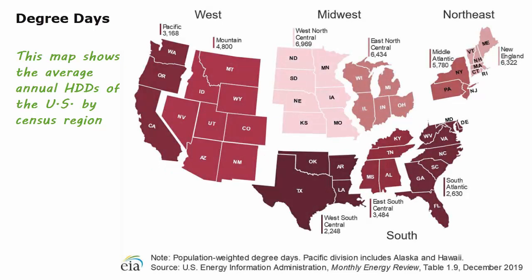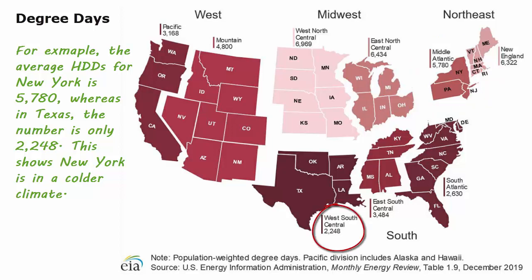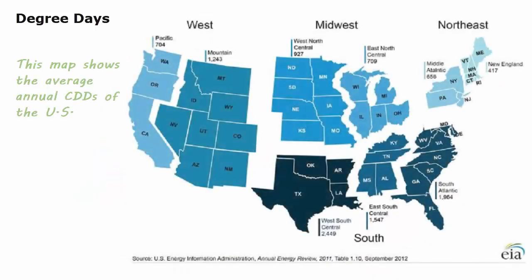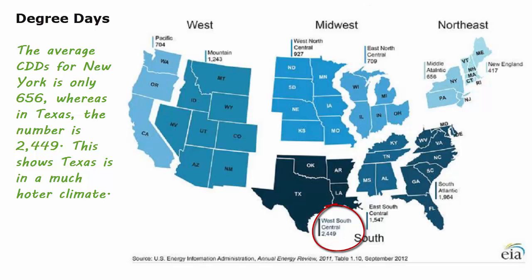This map shows the average annual heating degree days of the U.S. by census region. For example, the average heating degree days for New York is 5,780, whereas in Texas the number is only 2,248, showing New York is in a colder climate. Another map shows average annual cooling degree days: New York's average is only 656, whereas Texas's is 2,449, showing Texas is in a much hotter climate.